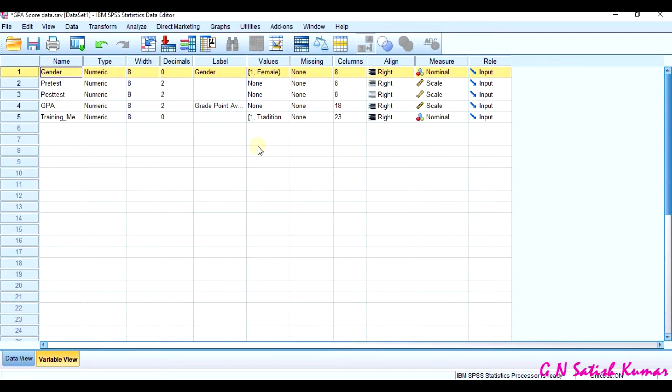I have this example GPS score, where I have two variables, pre-test score and post-test score. These two variables are scale data.